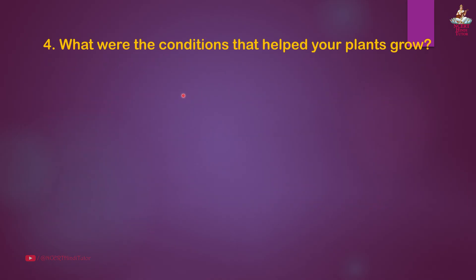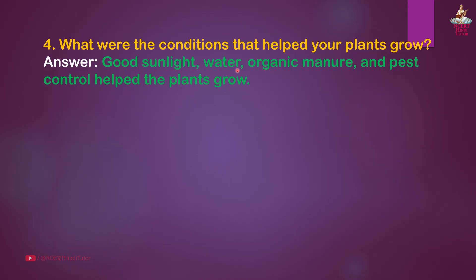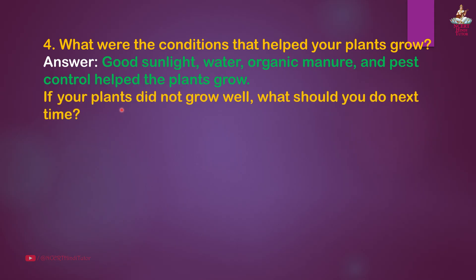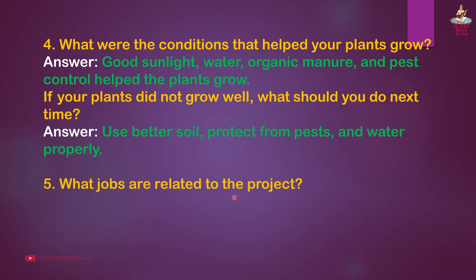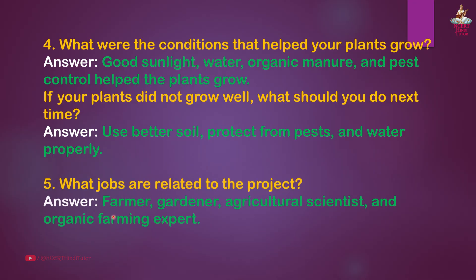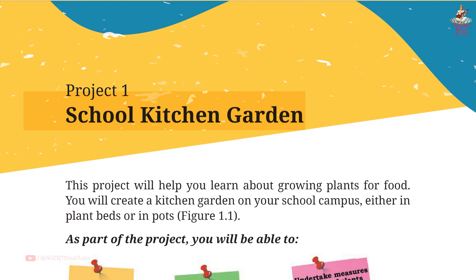Question 4: What were the conditions that helped your plants grow? Answer: Good sunlight, water, organic manure, and pest control helped the plants grow. If your plants did not grow well, what should you do next time? Answer: Use better soil, protect from pests, and water properly. Question 5: What jobs are related to this project? Answer: Farmer, gardener, agricultural scientist, and organic farming expert.